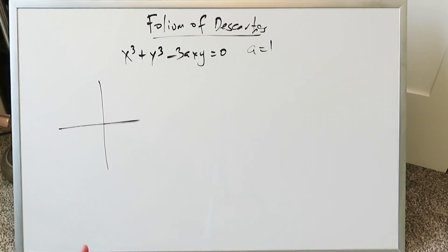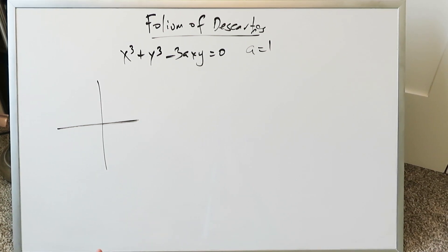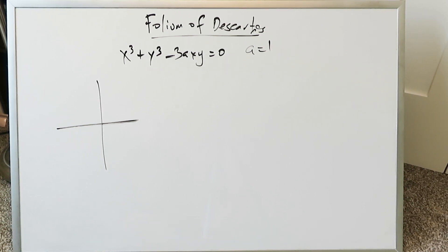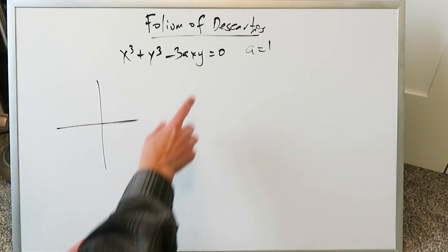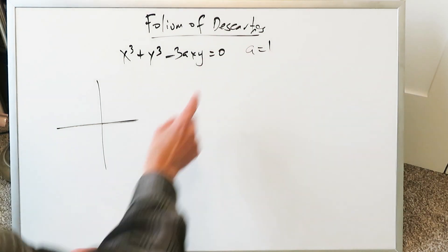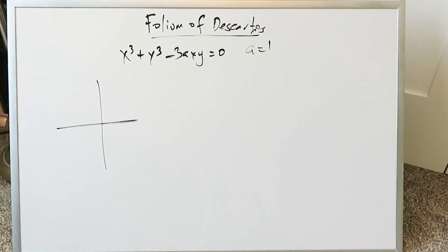Good afternoon, I'm Mr. Ish. Thank you for joining me for this video on the Folium of Descartes. Folium is a Latin word which means leaf. We're looking at a specific algebraic curve which was invented or discovered by the French mathematician Descartes, and we're going to examine it in terms of implicit differentiation.